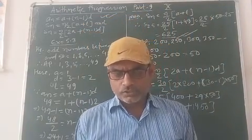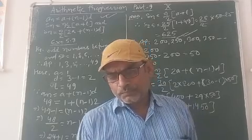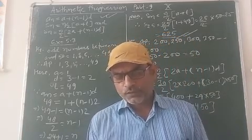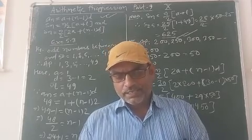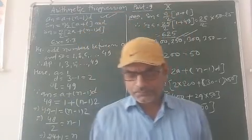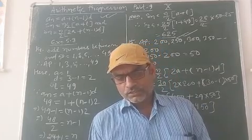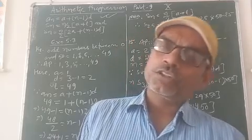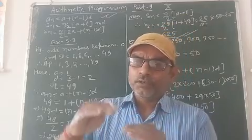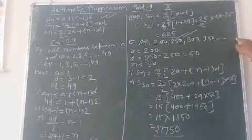Now question number 15. A contract on construction specifies a penalty for delay of completion beyond a certain date as follows: Rs. 200 for the first day, Rs. 250 for the second day, Rs. 300 for the third day, etc. The penalty for each succeeding day is Rs. 50 more than the preceding day. How much money does the contractor have to pay as penalty if he delays the work for 30 days? Since the penalty increases by 50 each time, we can take this as an AP: 200, 250, 300, and so on.